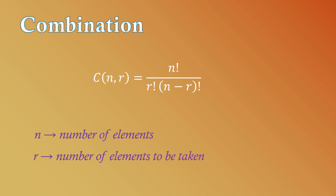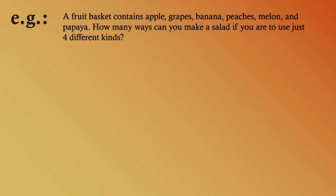For example: a fruit basket contains apple, grapes, banana, peaches, melon, and papaya. How many ways can you make a salad if you are to use just four different kinds? When making a salad, order doesn't matter, so this problem falls under combination.